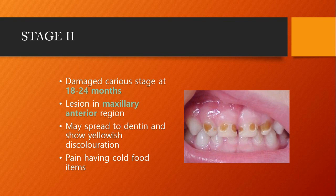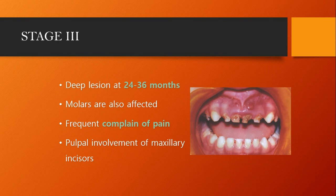Stage 2 is the damaged stage, occurring at 18 to 24 months. The lesion is seen in the maxillary anterior region only; it may spread to dentine and show yellowish discoloration. Whenever the child is having cold foods like ice cream or cold drinks, pain can be felt. Stage 3 is deep lesions, at 24 to 36 months — that is 2 to 3 years. Molars are also affected, there is frequent complaint of pain, and pulpal involvement of maxillary incisors occurs.